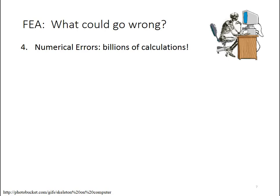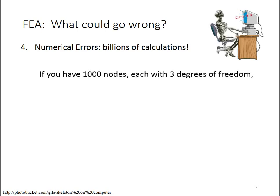A fourth category of what can go wrong in FEA is the number of calculations. There are numerical errors that build up in computations on finite precision computers. And let's look at how many calculations we have. If you have a thousand nodes in a model, and each node has three degrees of freedom, this is actually a fairly small model size depending on your application, you end up with a stiffness matrix that's 3,000 by 3,000.